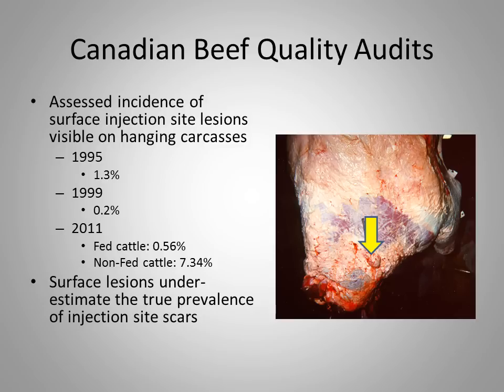We conducted another beef quality audit in 1999 and the incidence was down to 0.2%. In the most recent beef quality audit conducted by the Canadian cattle industry, in fed cattle — steers and heifers — the incidence of surface injection site lesions was 0.56%. In non-fed cattle, which are our cull cows and bulls, the incidence was 7%. However, these surface lesions underestimate the true prevalence of injection site scars in muscle.